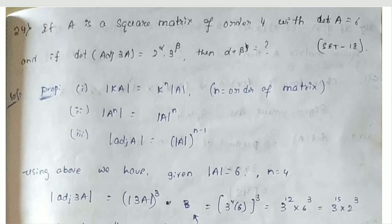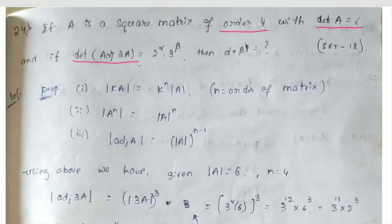The first question: If A is a square matrix of order 4 with determinant of A equal to 6, and if the determinant of adjoint of 3A equals 2 to the power alpha into 3 to the power beta, then we have to find alpha plus beta.